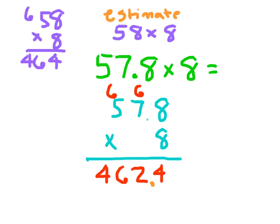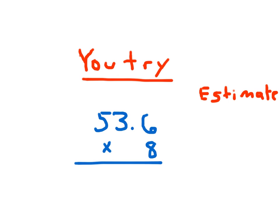So we have 4 in the hundredths place, 6 in the tenths place, 4 in the ones place, 2 in the ones place, and then we add a tenths place. All right, it's time for you to try. We have 53 and 6 tenths. We're going to round that to the nearest whole number and still multiply by 8. Let's figure out our estimate first, and then we'll figure out our actual product, placing that decimal point using our estimate. Go ahead and hit pause.